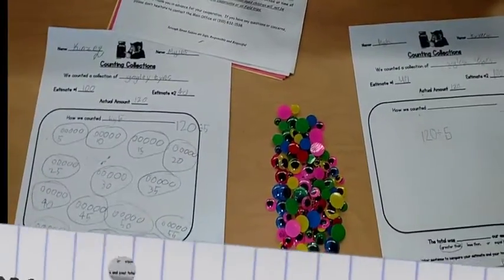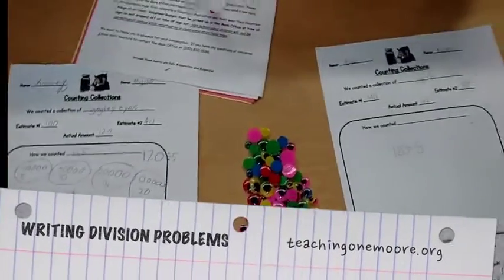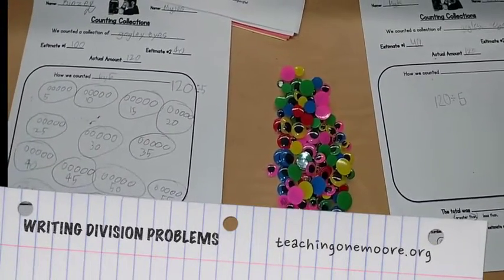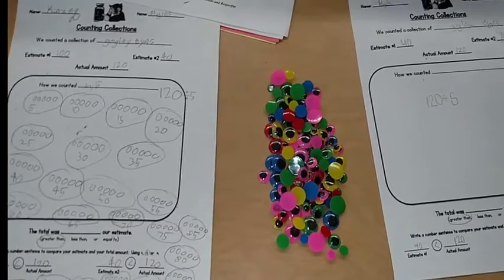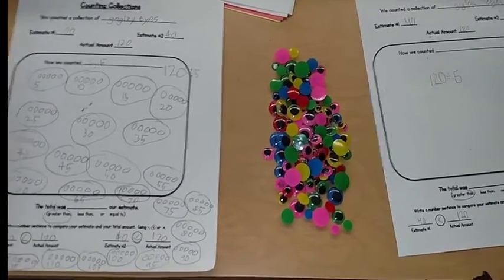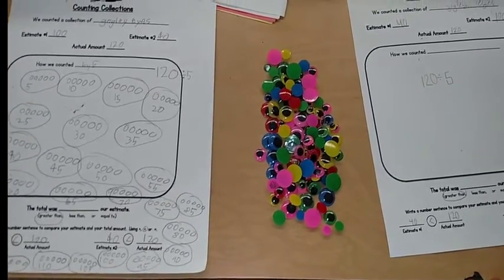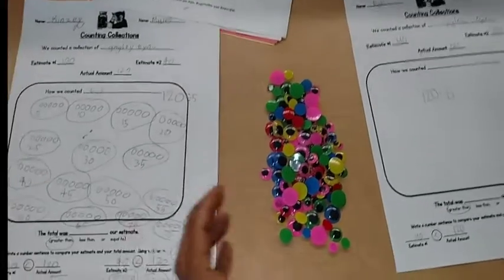You're counting the googly eyeballs, is that right? And so how did you count your googly eyeballs? By five. Okay, how many googly eyeballs did you have all together? Okay, and then you took this big pile of 120.